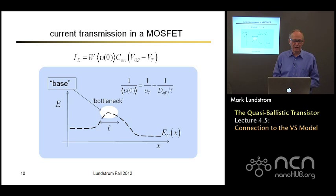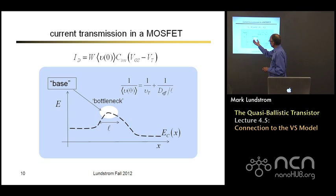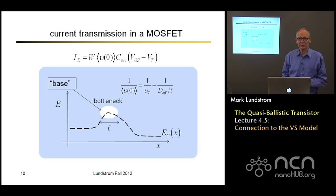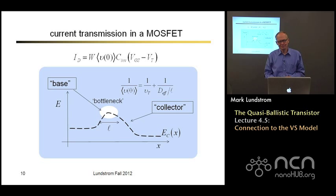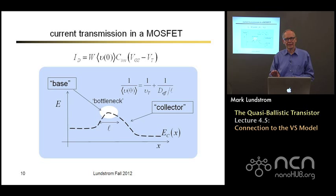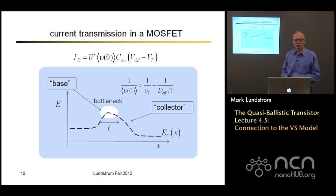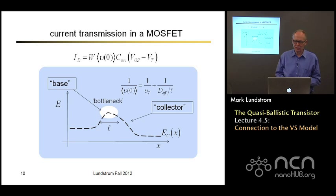For those familiar with bipolar transistors, some of this may sound familiar. This low-field region across which electrons diffuse looks like the base of a bipolar transistor, and the high-field region that sweeps electrons out through the drain looks like the collector. So the MOSFET and the bipolar transistor, in terms of their energy bands and how electrons flow, are really very similar devices.